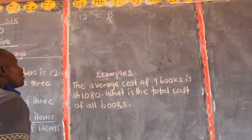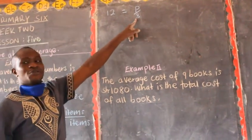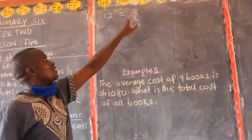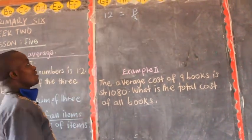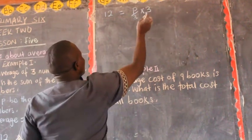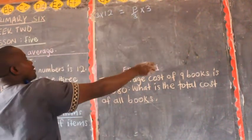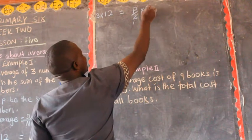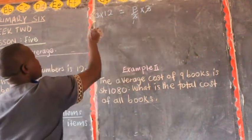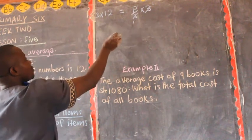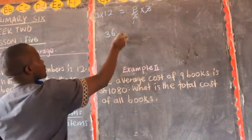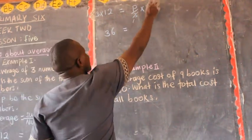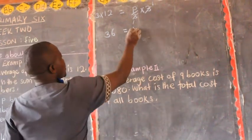Now when we reach this level, we remove the denominator by multiplying both sides by 3. We multiply this side by 3 and also the other side by 3. Three divided by three is 1. Then we multiply 12 by 3, which gives 36. On the other side, P times 1 gives us P.